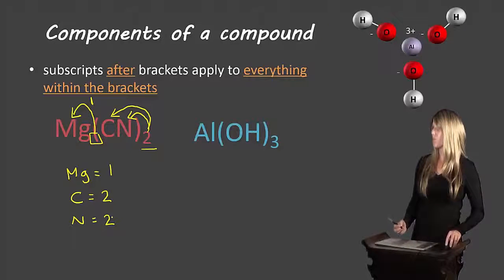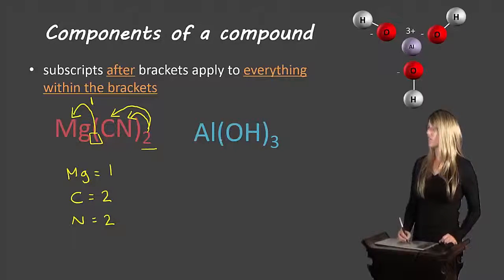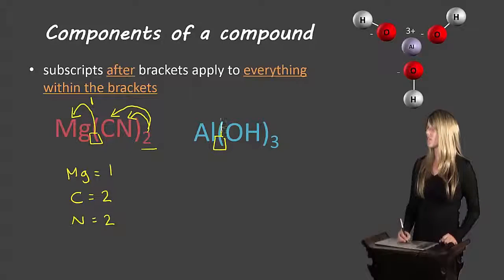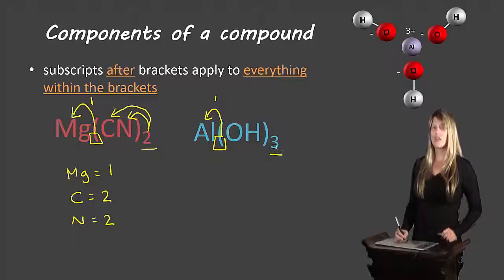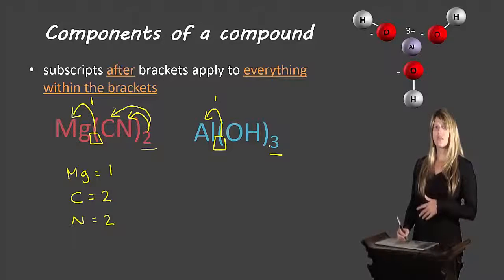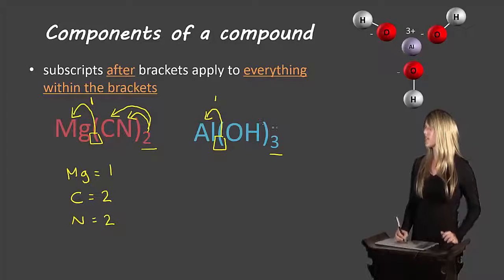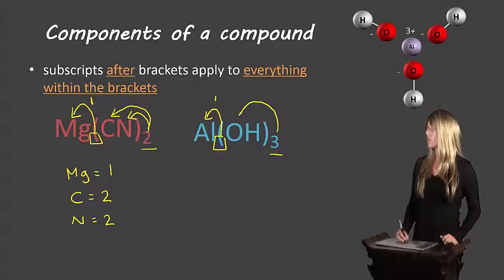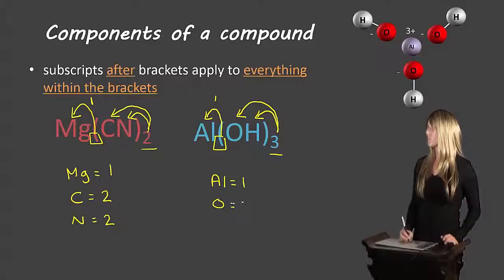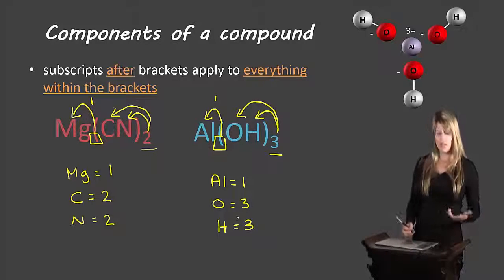Let's look at another example. In Al(OH)3, aluminum doesn't have a subscript, so there is one aluminum. The three comes outside the brackets, so it applies to everything inside the brackets: there are three oxygens and three hydrogens.